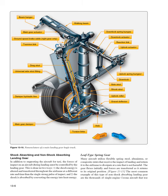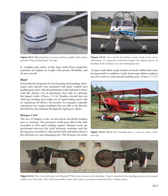Leaf-type spring gear: many aircraft utilize flexible spring steel, aluminum, or composite struts that receive the impact of landing and return it to the airframe to dissipate at a rate that is not harmful. The gear flexes initially and forces are transferred as it returns to its original position. The most common example of this non-shock absorbing landing gear are the thousands of single-engine Cessna aircraft that use it. Landing gear struts made from composite materials are lighter in weight with greater flexibility and do not corrode. Rigid landing gear: before curved spring steel landing struts, many early aircraft were designed with rigid, welded steel landing gear struts, with direct shock load transfer to the airframe. Modern aircraft using skid-type landing gear, such as rotorcraft, make use of rigid landing gear with no significant ill effects, as they typically experience low-impact landings.